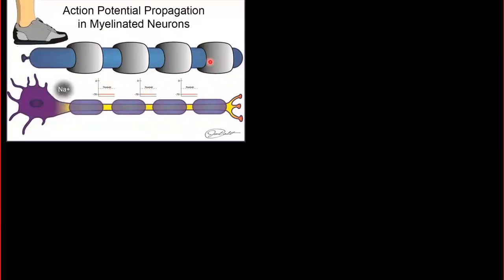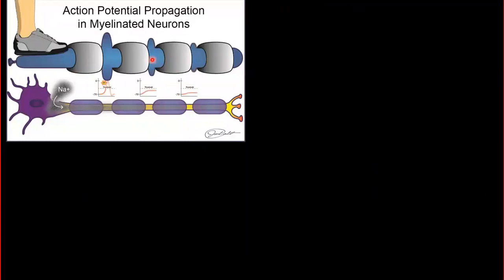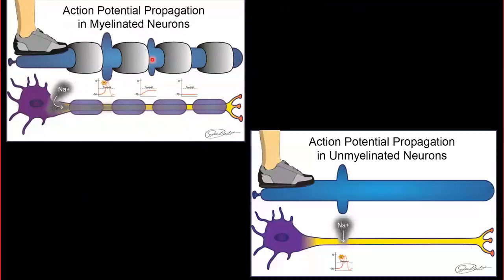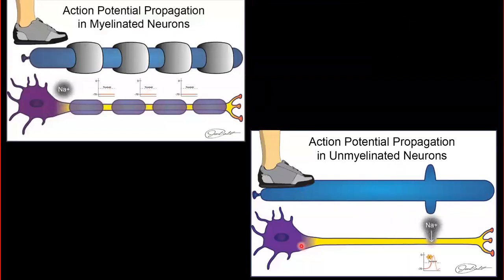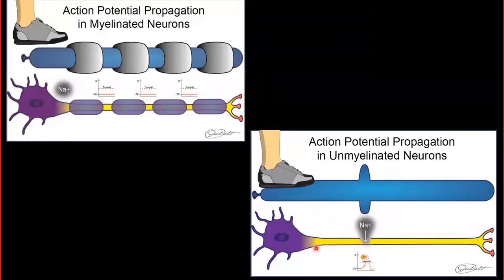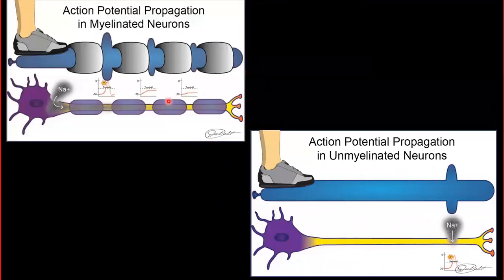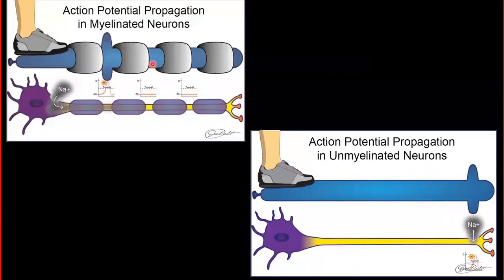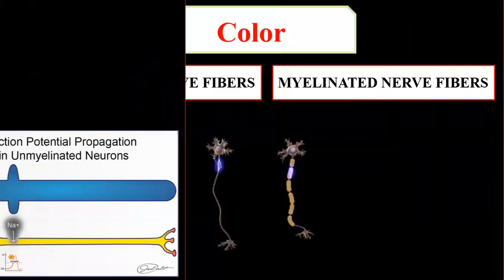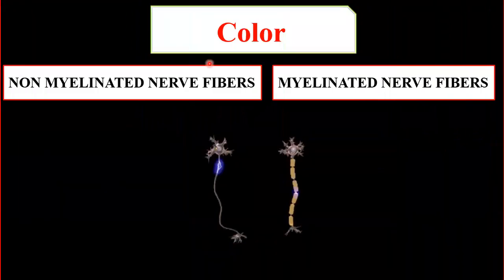In non-myelinated nerve fibers, the action potential travels throughout the entire axon, which is why nerve impulse transmission is slower. In myelinated fibers, the action potential only jumps from one node to another, making it much faster. These were the major structural and functional differences.